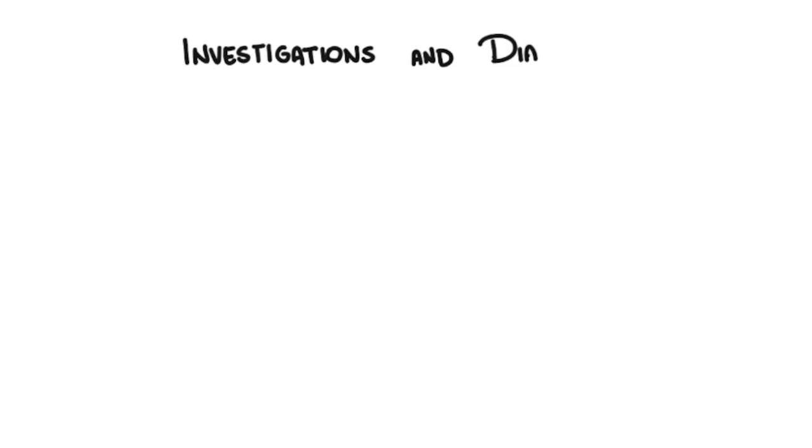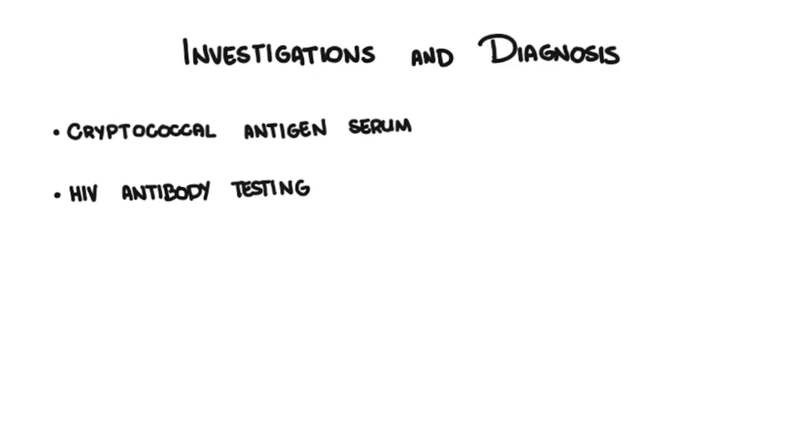Investigations to order with someone suspected of cryptococcus infections include a cryptococcal antigen test in the blood, HIV antibody testing if the patient's HIV status is unknown, a chest x-ray, and even a CT chest that may show nodules, consolidation, or infiltration.